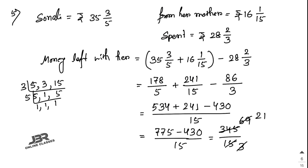Cancel 345/15 by dividing both by 15: 345 divided by 15 equals 23. So the answer is rupees 23.